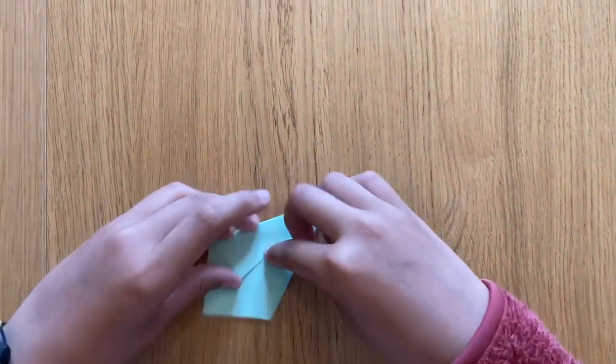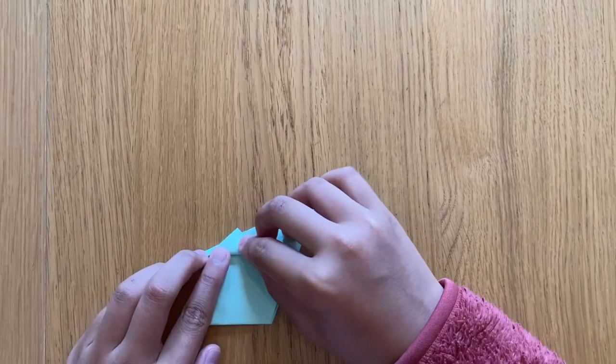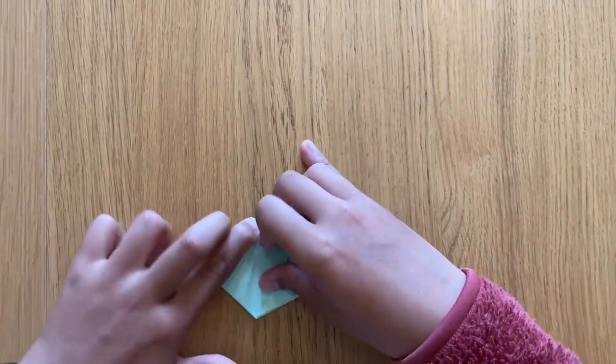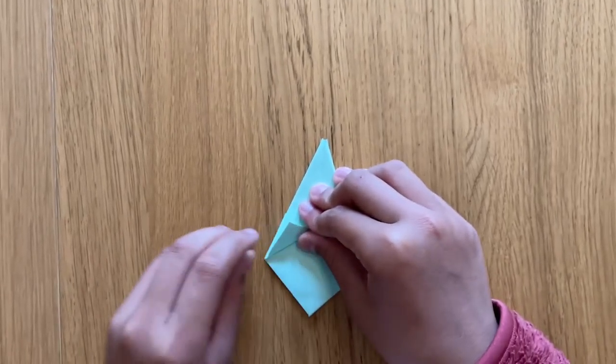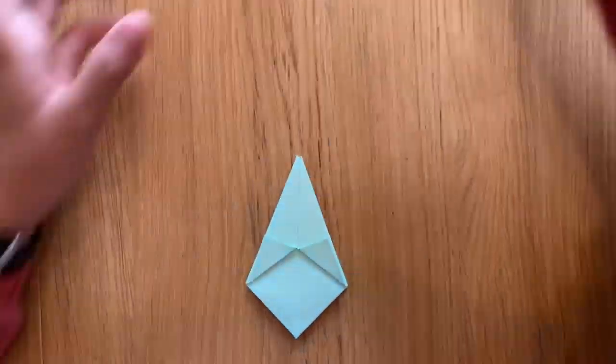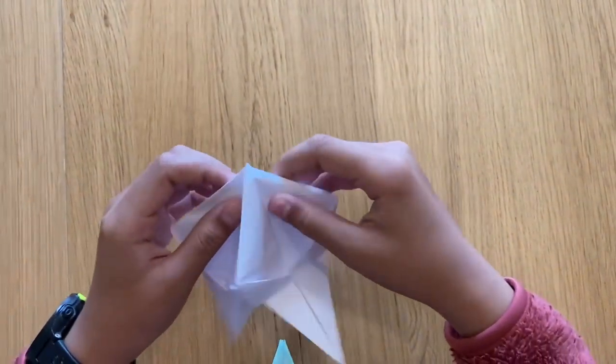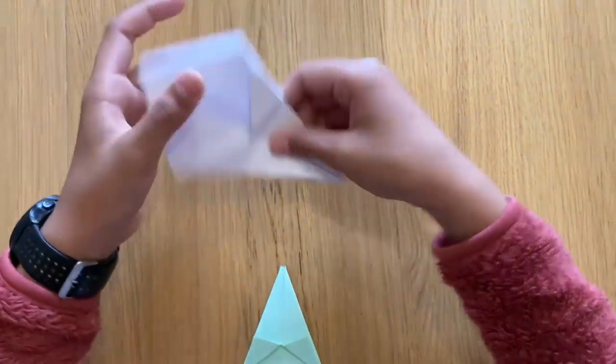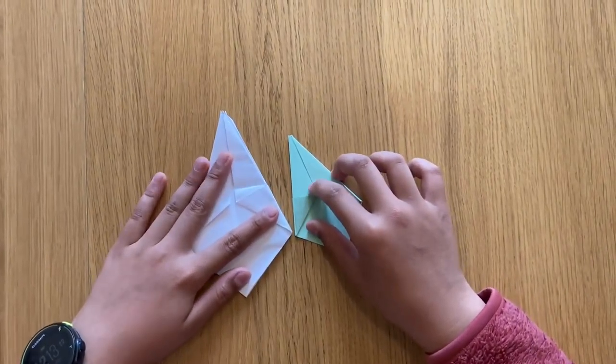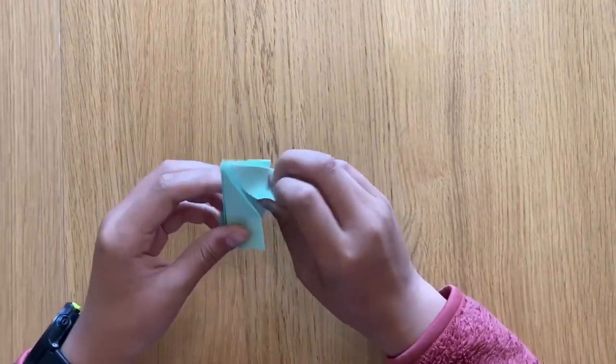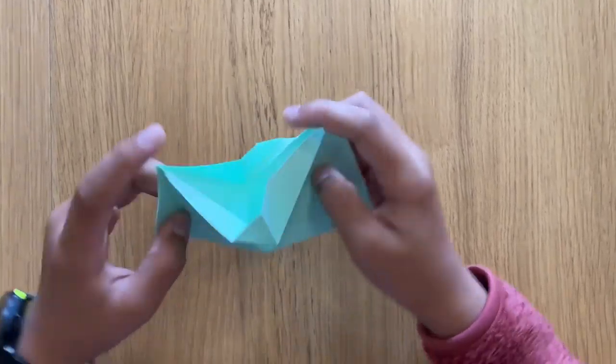As you can see, when we do this it looks pretty similar to the basket slash hat. Now look, this is the basket slash hat. When I make it flatten like this, it looks pretty similar, but we're not done yet. We need to open it up just like this.